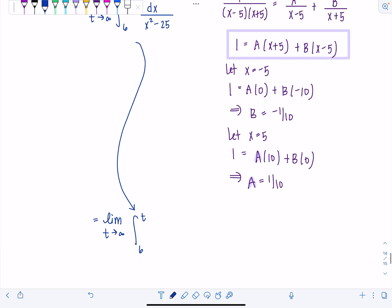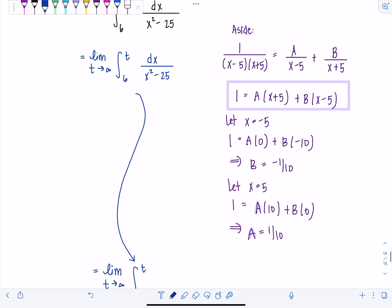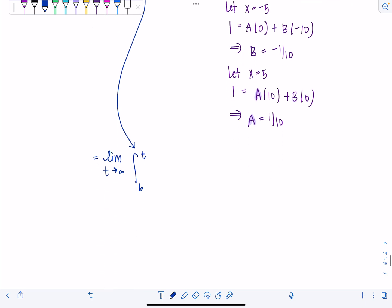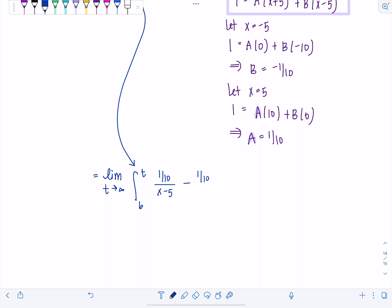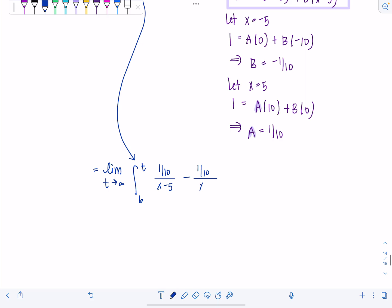From 6 to t. And then notice here we're going to have A over x minus 5. So that's 1 tenth over x minus 5. And then B is negative 1 tenth. So I'm just going to put minus 1 tenth over x plus 5. And then dx for all of this.